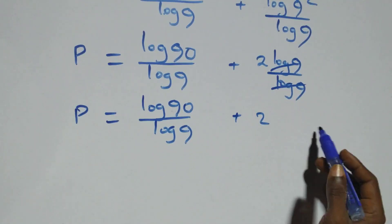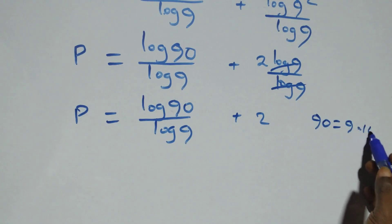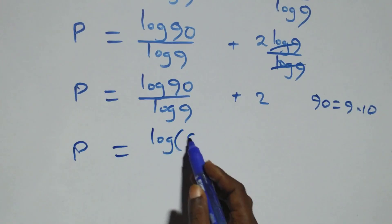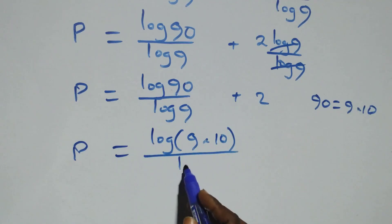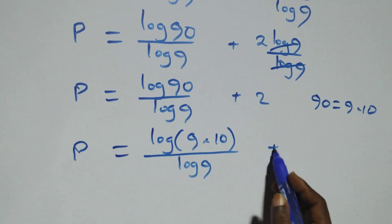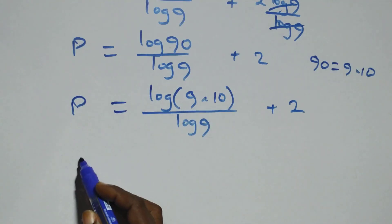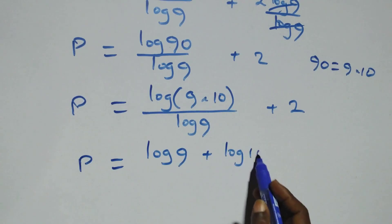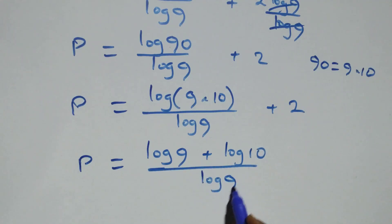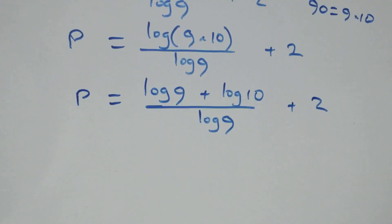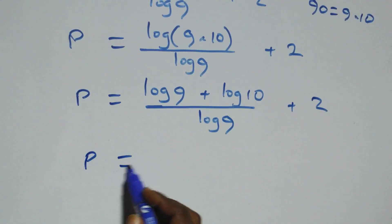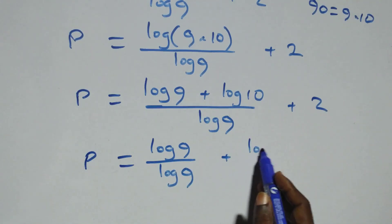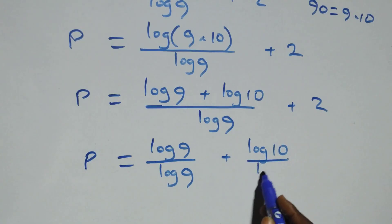Also here we can write 90 as 9 times 10, so we have log(9 times 10) over log 9 plus 2. This follows the law of logarithm, and we have p equals to log 9 plus log 10, all over log 9, plus 2.